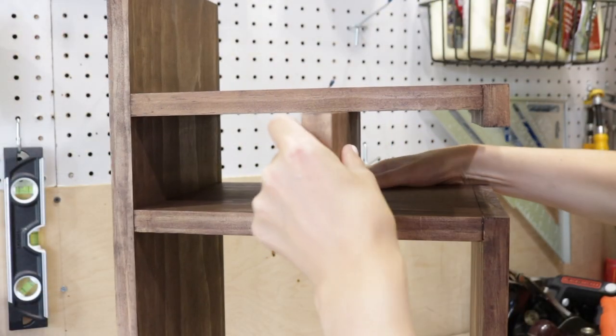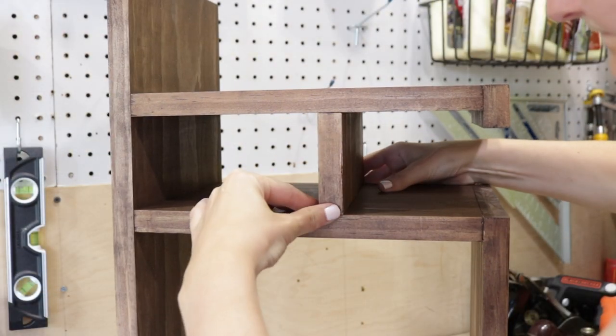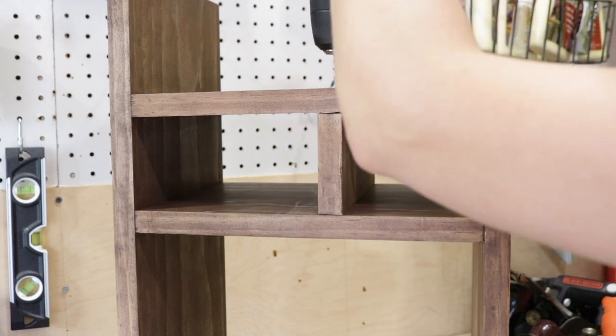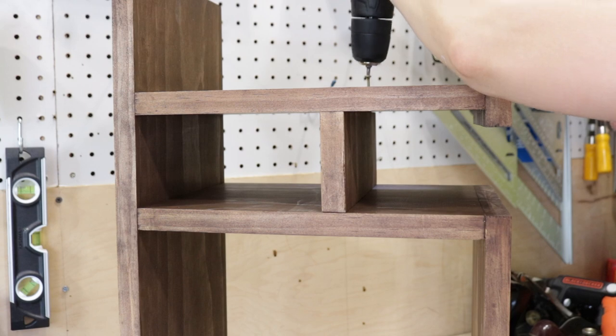Now at this point in the process I realized that the bottom shelf could not hold the weight of my bicycle. So you are going to do what I did here and add a spacer piece in between the middle and bottom shelves with some wood screws.